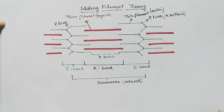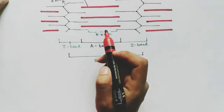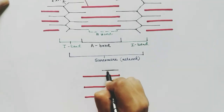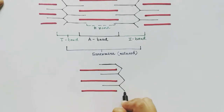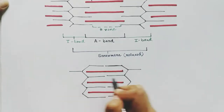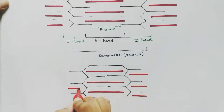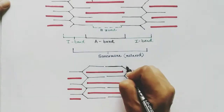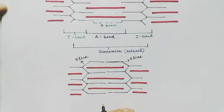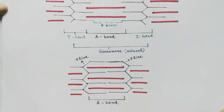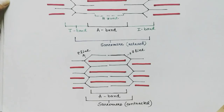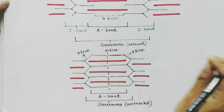In the relaxed sarcomere, both bands are visible. When contraction occurs, the length of the myosin remains the same, but the actin filaments come closer to each other, so the sarcomere length decreases. The I band vanishes, but the A band remains the same since the myosin length is unchanged. The sarcomere length decreases during contraction — you can see the A band is still visible, the I band is absent, and the M line marks the midline.